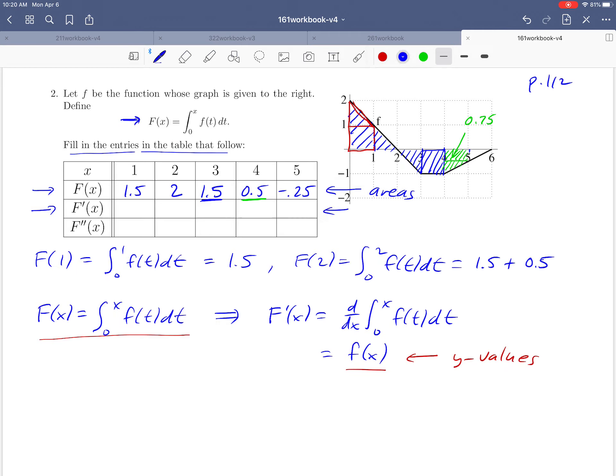So F'(x) = f(x) means every entry in the second row represents y-values of function f. For F'(1), we read the y-value at x=1, which is 1. F'(2) is 0, F'(3) is -1, F'(4) is -1, and F'(5) is -0.5.